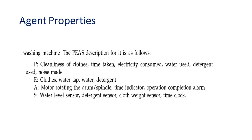Here is an example for a washing machine. When automating a washing machine, the performance measure includes the cleanliness of the cloth as the highest priority, plus time taken, electricity and water usage, detergent usage, and noise made. The environment in which the washing machine operates includes cloth, water, and detergent. The actuators are the motor spinning and a time indicator with an alarm at the end. The sensors are water level, detergent level, a time clock, and cloth weight.